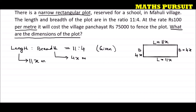The question tells us: at the rate of Rs. 100 per meter, it will cost the village panchayat Rs. 75,000 to fence the plot. Fencing the plot means placing a fence on the boundary wall of the rectangle. That means we need to find the perimeter — fencing involves the perimeter of the rectangle.